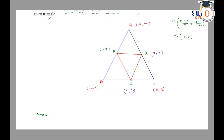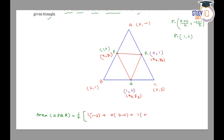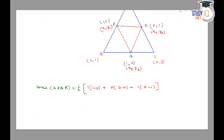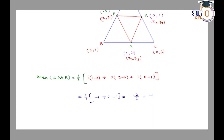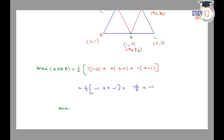Area of triangle PQR = (1/2) × |x1(y2 - y3) + x2(y3 - y1) + x3(y1 - y2)|. Taking P(1,0) as (x1,y1), Q(1,2) as (x2,y2), and R(0,1) as (x3,y3), this gives us (1/2) × |1(2-1) + 1(1-0) + 0(0-2)| = (1/2) × |-1 + 0 - 1| = (1/2) × |-2| = 1. Since area cannot be negative, area of triangle PQR = 1 square unit.